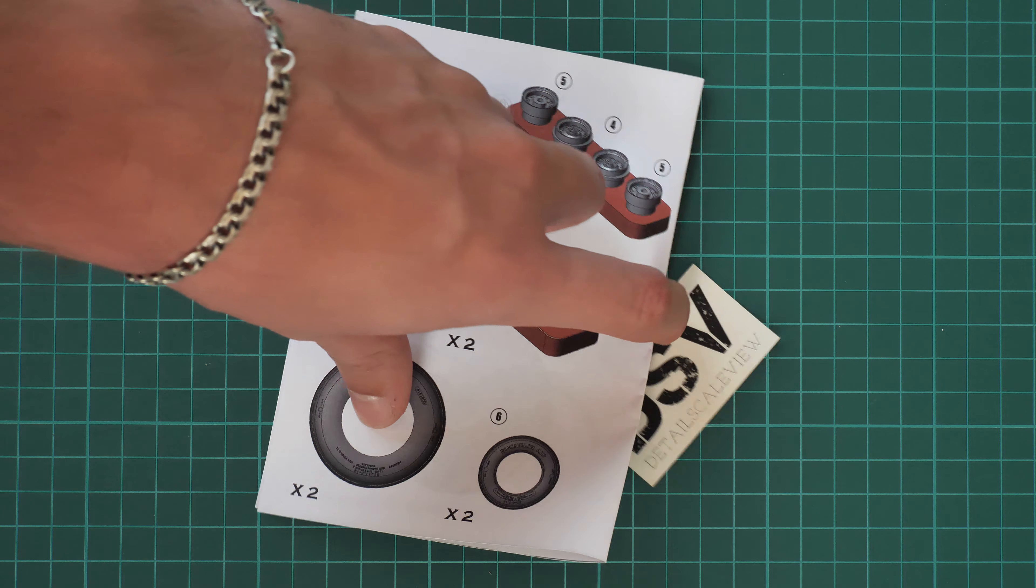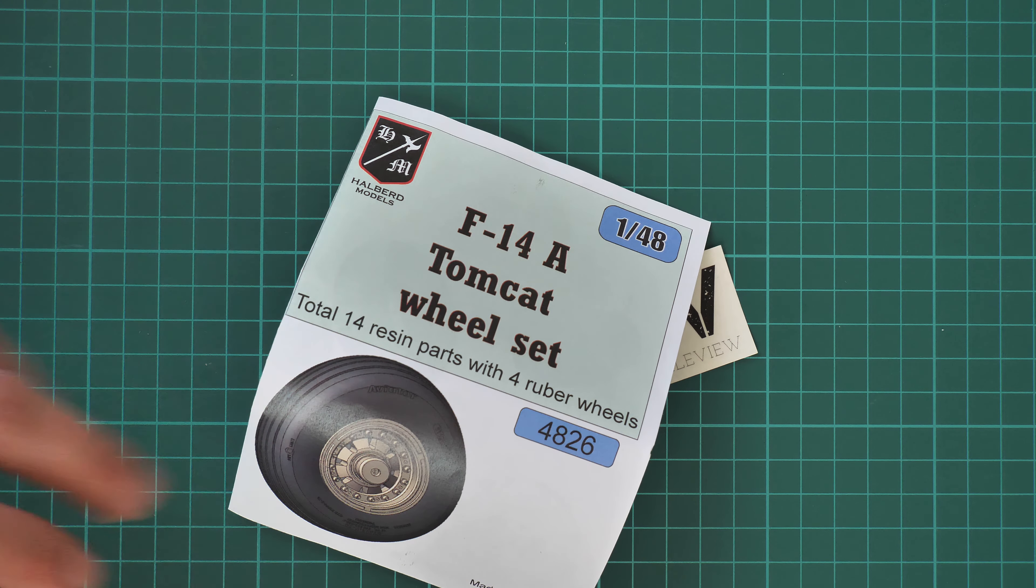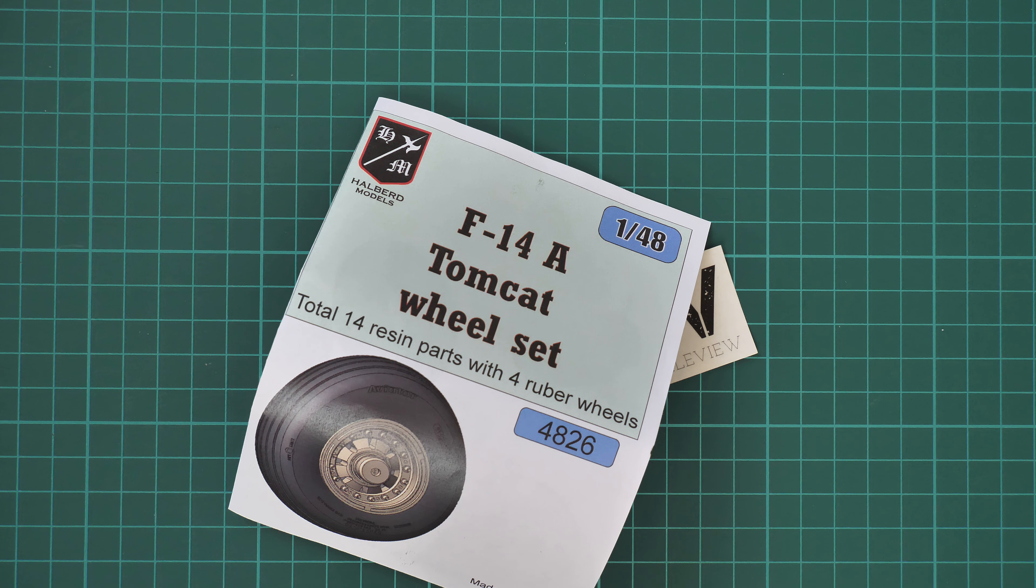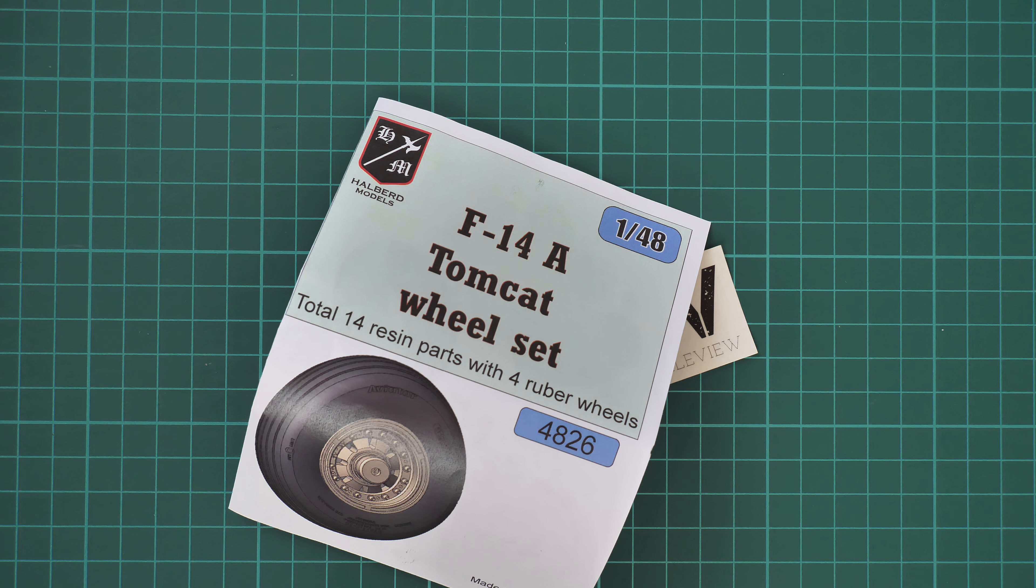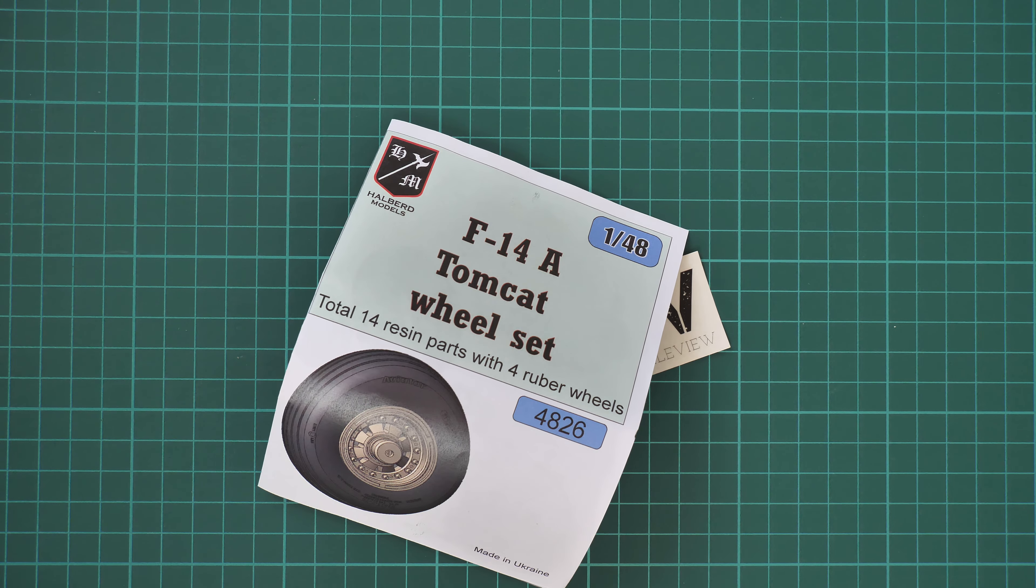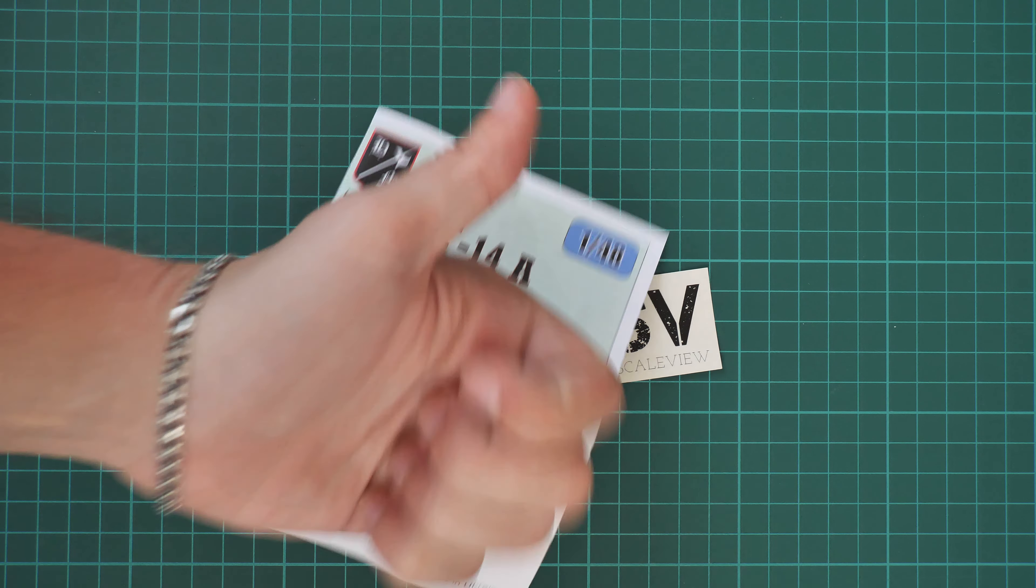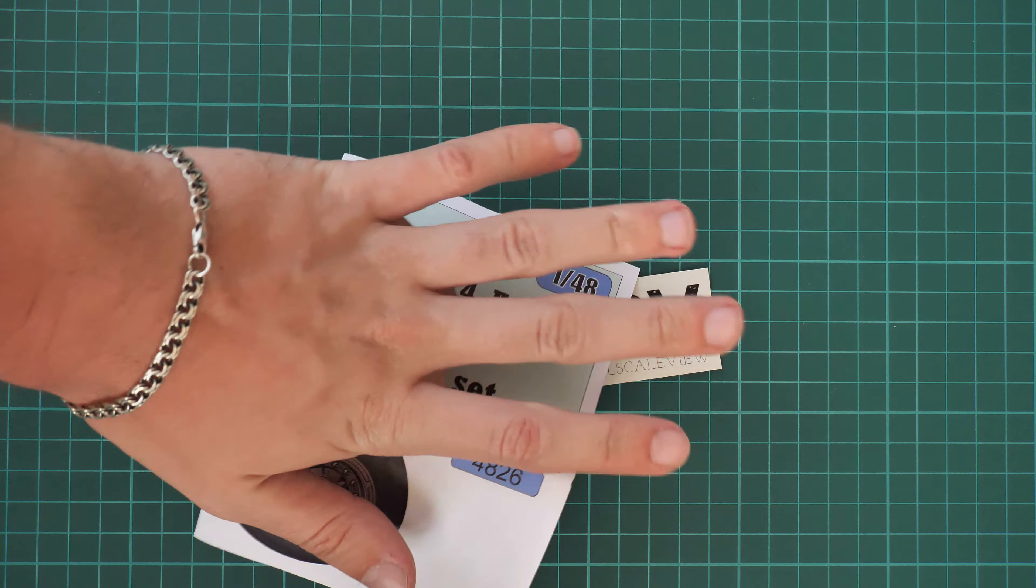In my opinion, this is a quite worthy upgrade to your F-14 in 1:48 scale. So if you're brave enough to build the Tomcat in such huge scale, it should be worth getting those wheels and installing them on your aircraft model. I will be happy to hear your opinion about this kit—write it here in the comment section below. If you like this video, don't forget to press the like button, subscribe to our YouTube channel, and I will see you in the next video review. As usual, bye.